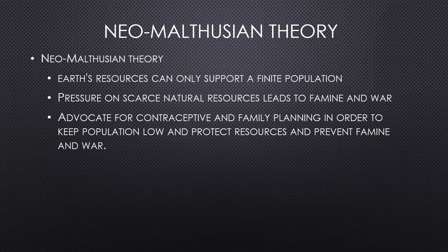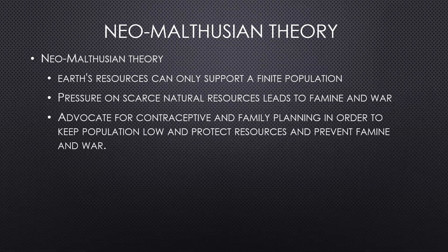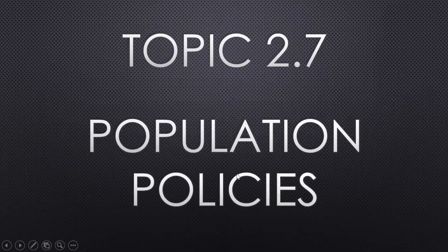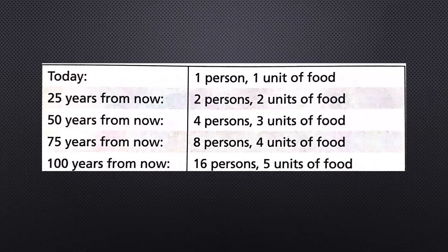Earth's resources can only support a finite population, and that puts pressure on scarce natural resources, which could lead to famine and war. Neo-Malthusians agree with the theory but replace food with the world's natural resources as the core concern. Growing population may bring about increasingly unsustainable development — for example, agricultural advances may place serious strain on water and soil. Neo-Malthusians therefore advocate for contraception and family planning to keep population low and protect global resources.